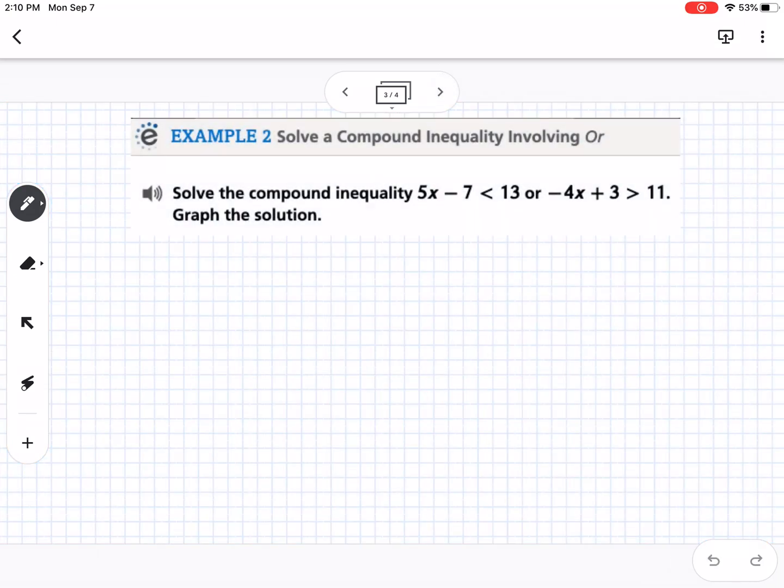So now we're just going to practice solving these. So it says to solve the compound inequality, five x minus seven is less than 13 or negative four x plus three is greater than 11. So the nice thing is this is no different than just solving a single inequality. We're just solving two of them.